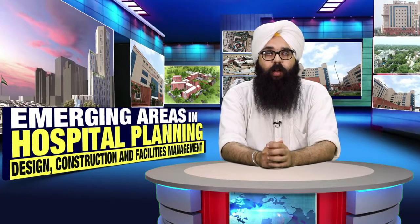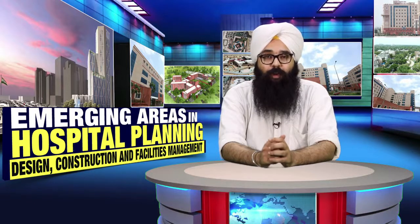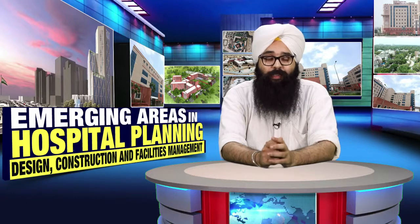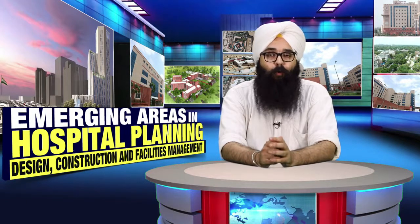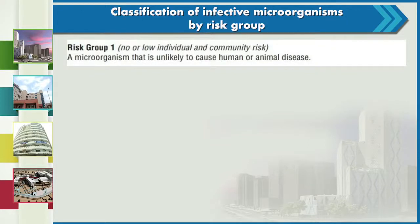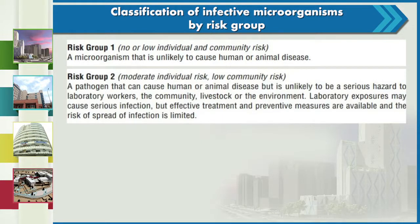In a laboratory there are substances which can pose a threat to humans because they are present in high concentration. We classify them according to the risk they pose. Risk has been classified into four levels. Risk group 1 means the microorganism is unlikely to cause any disease. In risk group 2, the pathogen can cause human or animal disease but is unlikely to be a serious hazard; effective treatment and preventive measures are available and the risk of spread is limited.